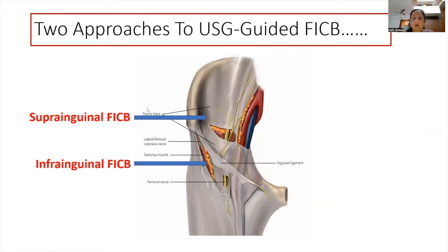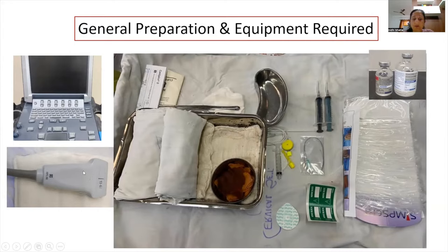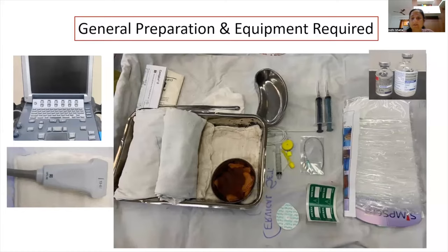The ultrasound guided fascia iliaca compartment block has two main approaches: suprainguinal — above the inguinal ligament — and infrainguinal — below it. Before giving any block, general preparation must be in place. For ultrasound guidance, you need an ultrasound machine with a linear high-frequency probe. All drugs, sterile dressings, peripheral nerve block catheter sets, syringes, local anesthetics, and sterile drapes must be ready. Emergency drugs, equipment, and patient monitoring are mandatory.